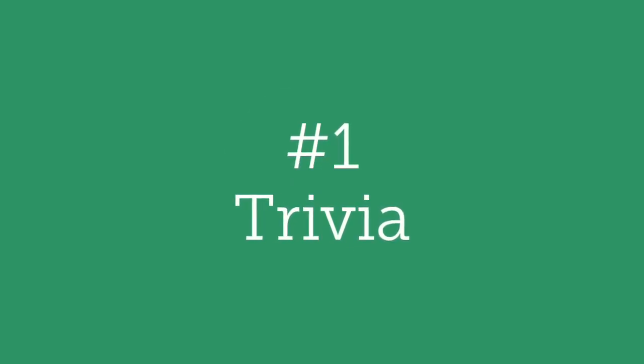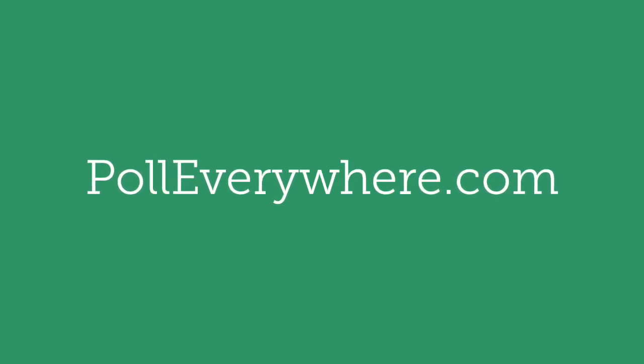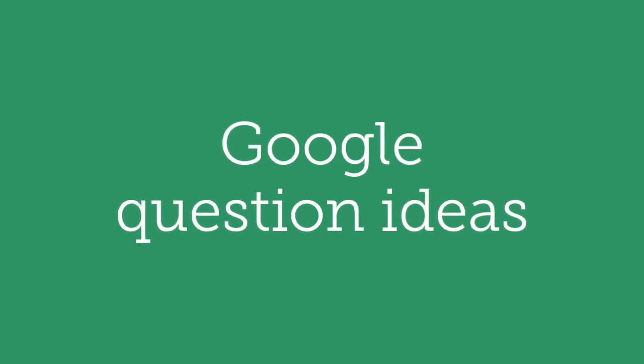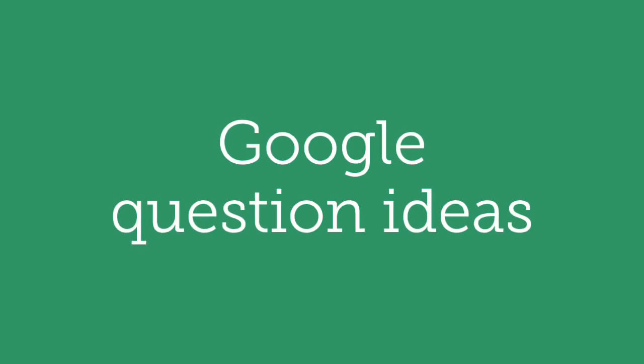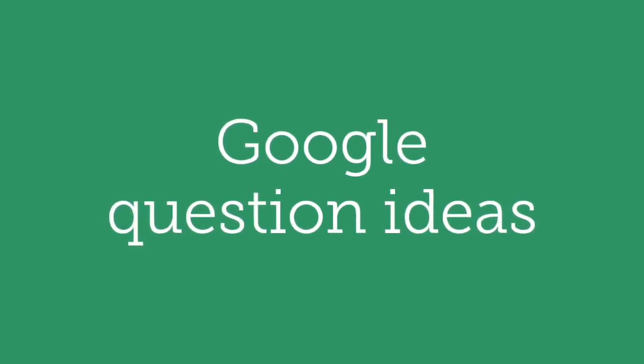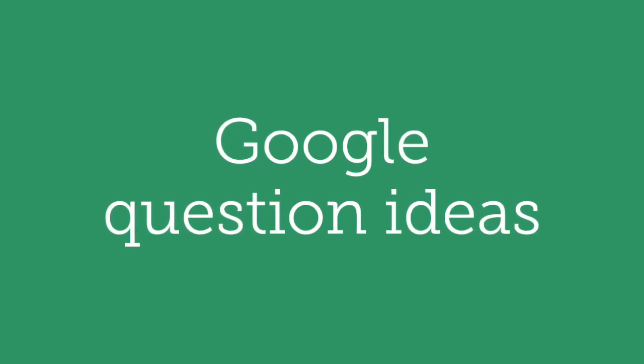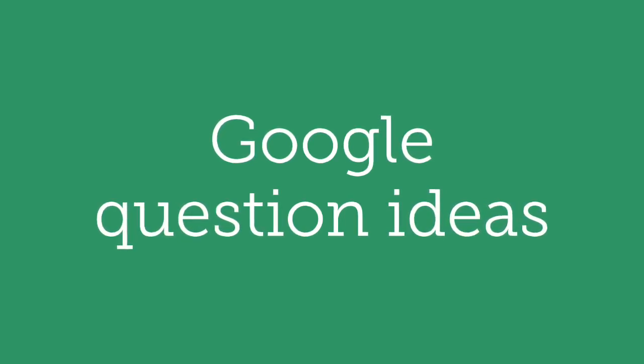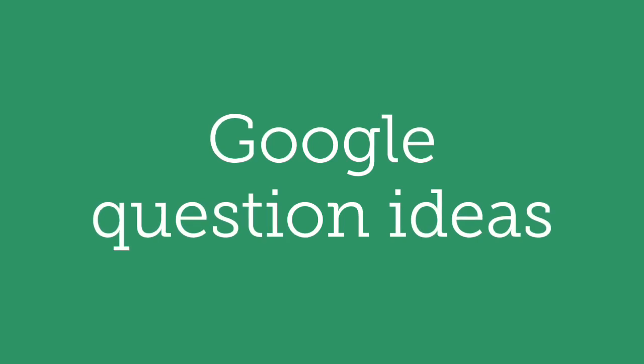The first game is trivia. You can use a site called polleverywhere.com. There are other sites out there as well, like Kahoot if you're working with younger people. If you do a Google search, you'll find different polling options online. Once you've created a free account on one of the poll services or online game apps, you can go to Google and look for question ideas, since a lot of people have questions and answers already out there.